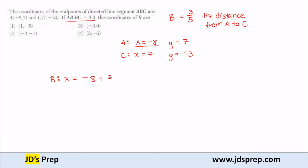plus three-fifths the distance. The distance between C and A is 7 minus negative 8, which means my x-coordinate is -8 plus three-fifths of 15, which gives me -8 plus 9, which is 1.